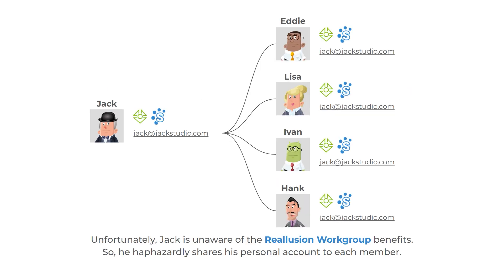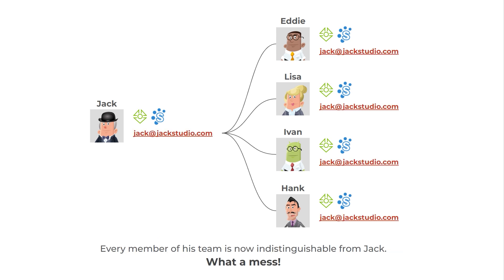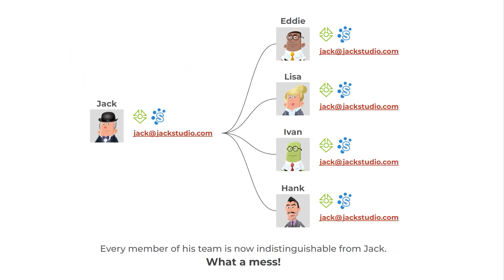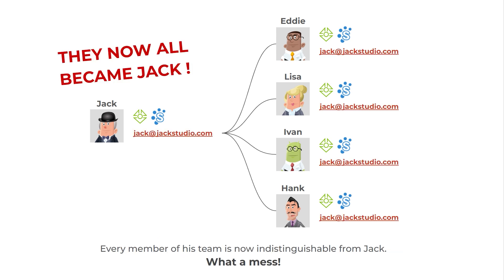Unfortunately, Jack is unaware of the Re-Illusion workgroup benefits. So, he haphazardly shares his personal account to each member. Every member of his team is now indistinguishable from Jack.